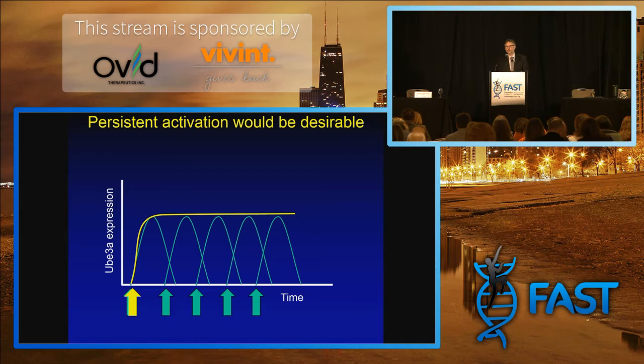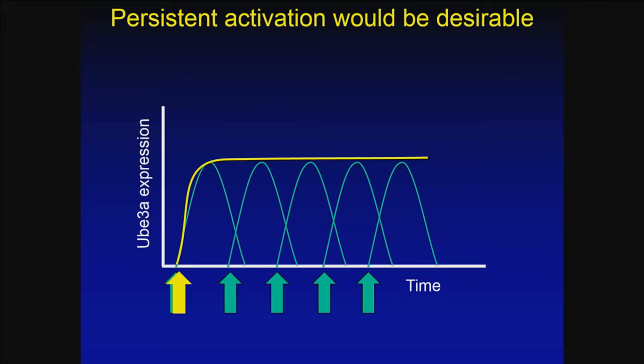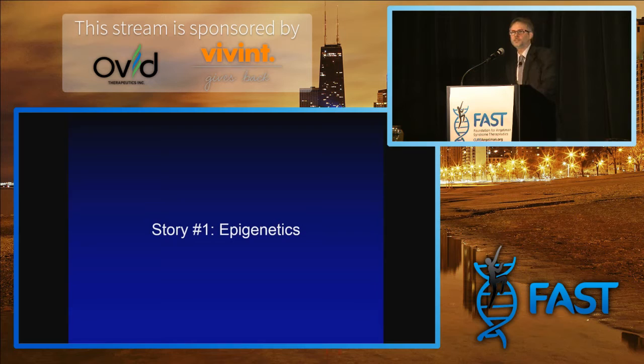What we would really like is to have a more persistent effect — to have something where you inject it and it has a longer duration of action. Ideally, it would be great if we could just inject something once, and then all the UBE3A levels would come up, and we could just walk away and not have to do retreatments. That is story number one, and story number one is about epigenetics.